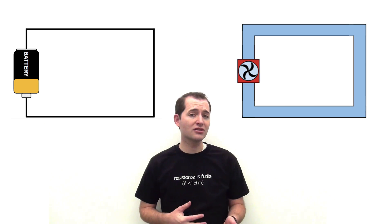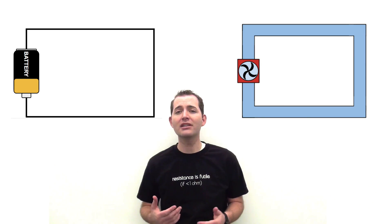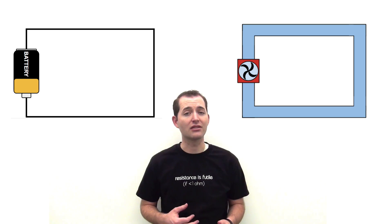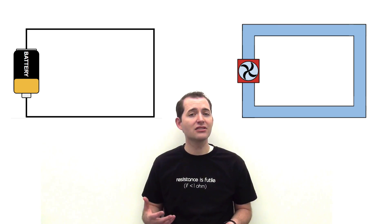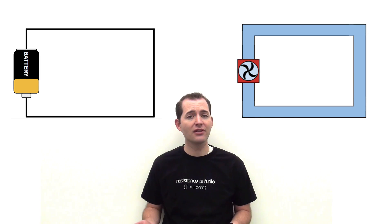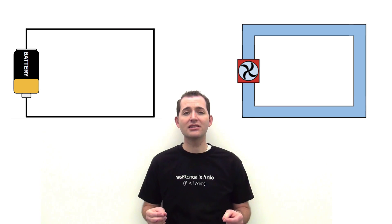We're going to look at some basic properties and components of an electrical circuit by comparing it to a closed water system. In both our electrical circuit and our water system, we're dealing with what's called a closed circuit or a closed loop. This is where the electrical current can flow through an uninterrupted path that's continuous.